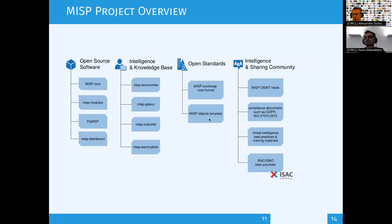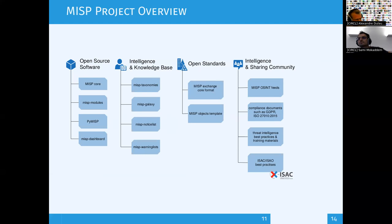To be clear on the project structure: we have four pillars. First, MISP is an open source project with plenty of open source software split into multiple repositories — more than 70 repositories on the MISP project page on GitHub. There is the MISP core software, which is the API backend. Then we have additional software like MISP modules, a nice way to extend MISP without touching the core system.